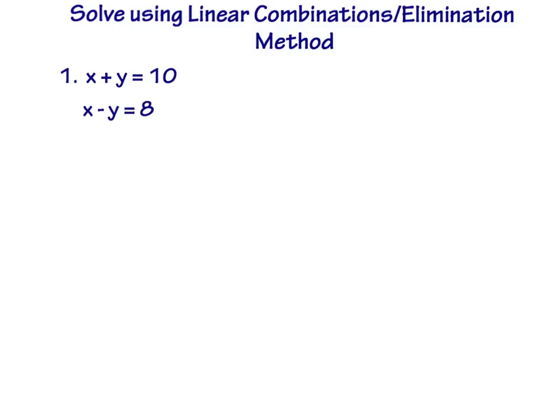Take a moment to jot down this example in your notebook. Both of these equations are already written in standard form. The x's are lined up, the operations are lined up, y's are lined up, equal signs are lined up, and constants are lined up — this is essential in solving the system using the linear combination or elimination method. So step one is done; we are already in standard form. Step two says we need opposite terms. I've got a positive y and a negative y, so I've got two opposite terms already. My first two steps are done.